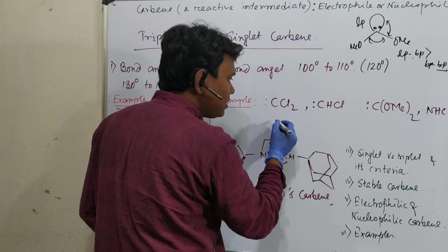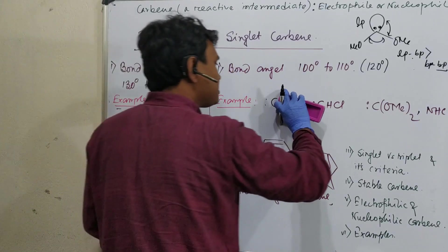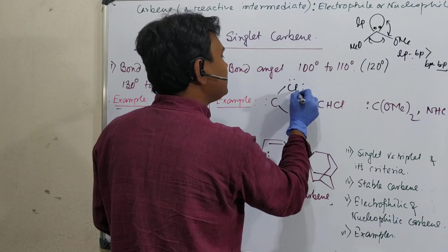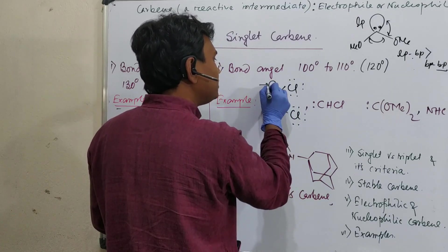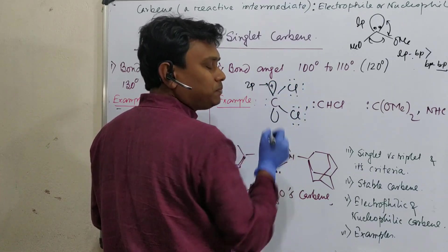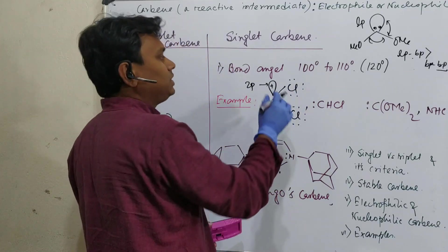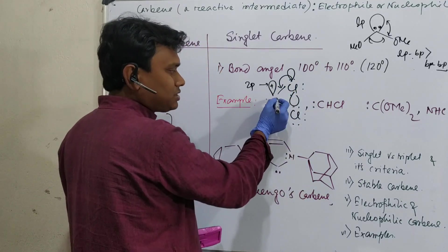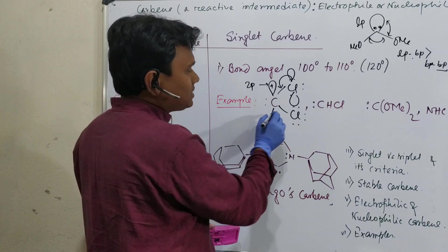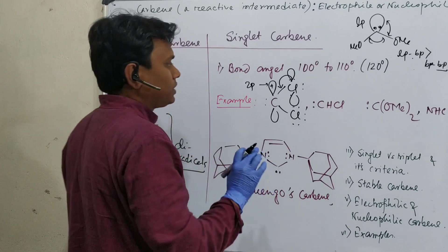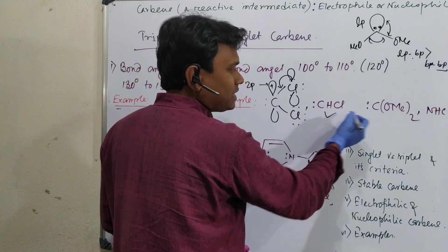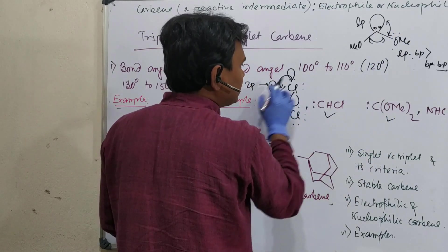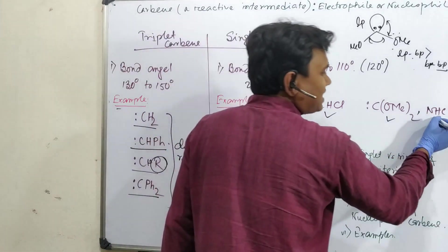Example of singlet carbene is CCL2. How? If you look at CCL2, this is one chlorine, one chlorine with three lone pairs. I know you will say this is 2p vacant and this is 3p - orbital matching is poor, I agree. But still some overlap is there. That's why they donate this lone pair here. And you will find this carbene generated in Reimer-Tiemann reaction. Please visit that video I have already uploaded.